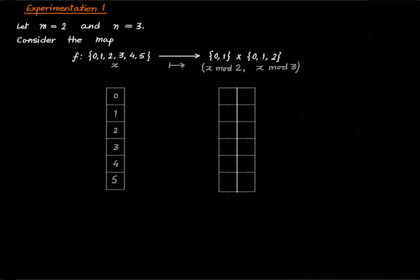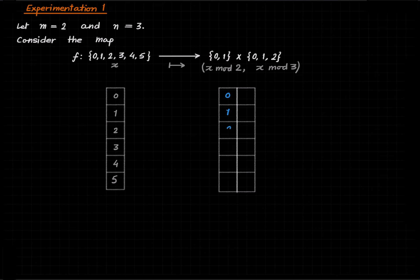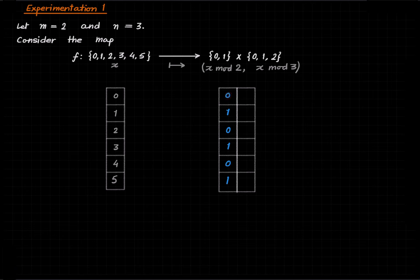Let us now explicitly describe this map by writing down the outputs corresponding to all the possible inputs. If we feed in 0 we get a pair, feed in 1 we get a pair. Let's first fill up the first column, which denotes the first entry of any output. The first column will alternate: 0, 1, 0, 1, 0, 1. Why? Because x mod 2 depends on the parity of x — when x is even you get 0, when x is odd you get 1.